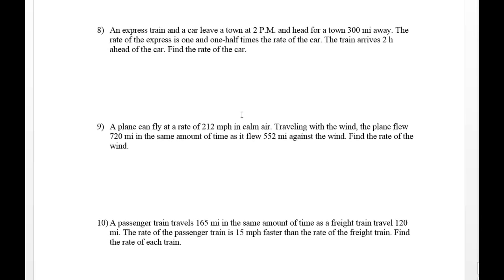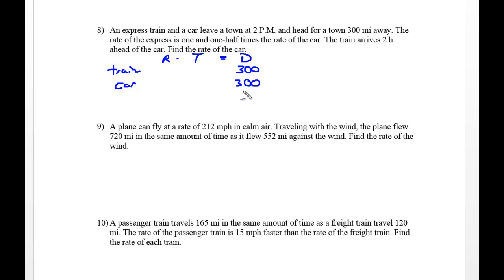Let's look at an express train — this is an odd problem because the t's will not be the same. An express train and a car leave a town at 2 pm and head for a town 300 miles away, so both distances are 300. The rate of the express train is 1.5 times the rate of the car: 1.5x for the train and x for the car. The train arrives two hours ahead of the car — find the rate of the car.